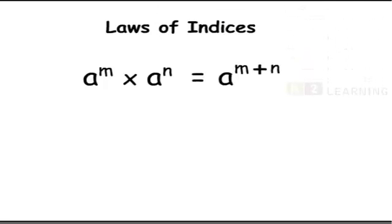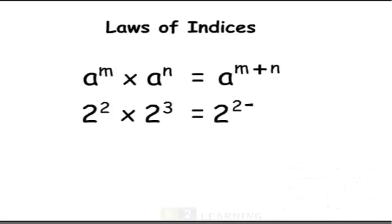For example, 2 raised to 2 multiplied by 2 raised to 3 is 2 raised to 2 plus 3, which is equal to 2 raised to 5, which is equal to 32.